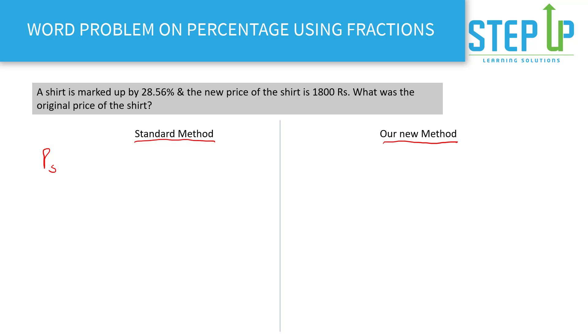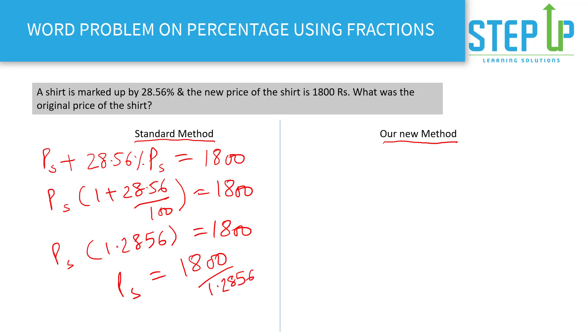So let's say the price of the shirt be P. Price of the shirt is marked up by 28.56%, that means P plus 28.56 percent of P equals 1800. That means if you say price of the shirt common, one plus 28.56 by 100 equals to 1800, or you can say P times 1.2856 equals 1800. Or you can calculate the price of the shirt as 1800 upon 1.2856. I mean after doing all these equations, still you are left with this number, and imagine this is like a nightmare. Who wants to waste so much of time in the exam? Plus even if you get it right, there could be a chance either you wasted a lot of time or you end up with a wrong answer.